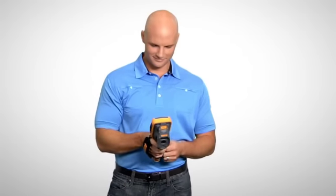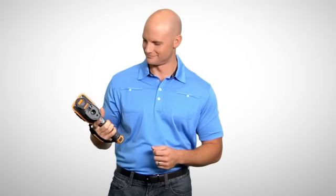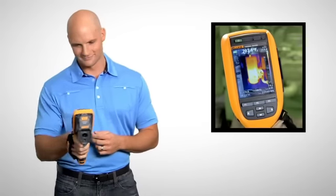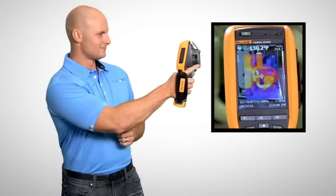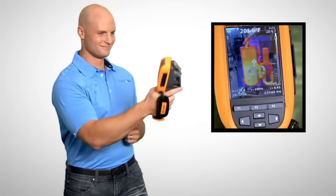Fluke's patented IR Fusion technology combines visible and thermal images for faster inspections and better reporting. With picture-in-picture mode you can align infrared images within visible light images. And auto-blend mode lets you blend partially transparent infrared and visible images into a single view.